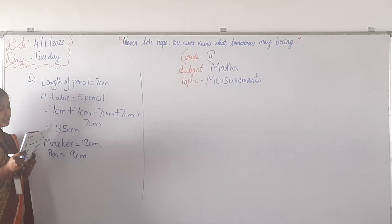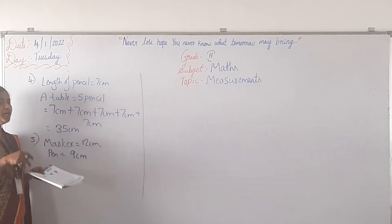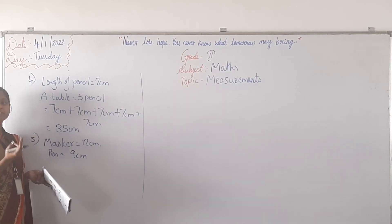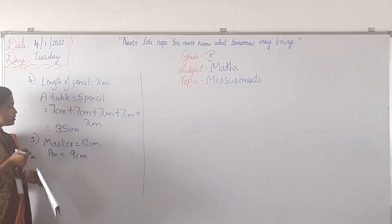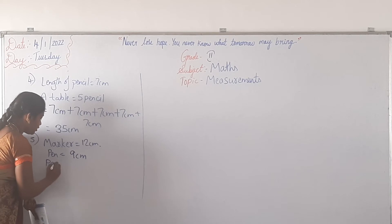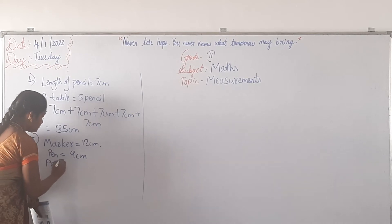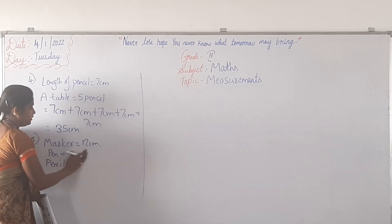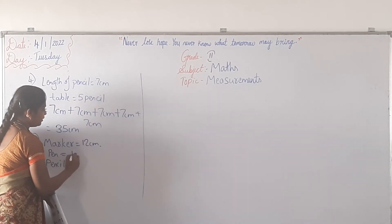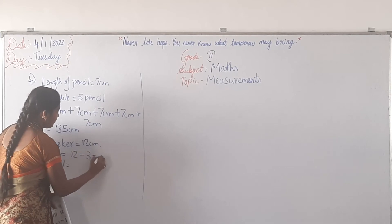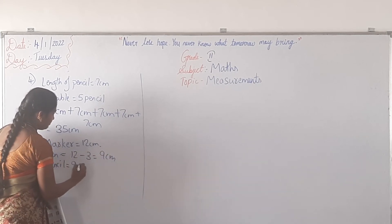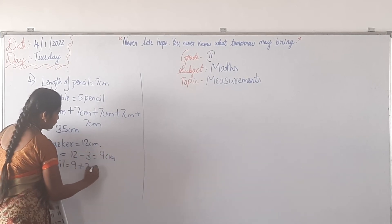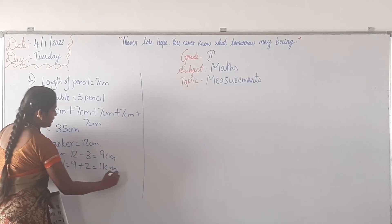Pencil is 2 cm longer than pen. Longer than pen means addition. So 9 cm plus 2 is how much? 9 plus 2 is 11 cm. So the length of the pencil is 11 cm.